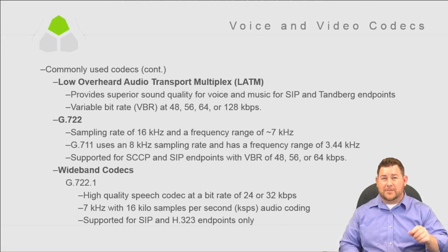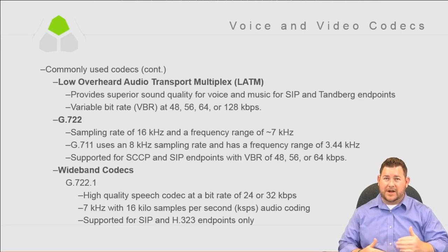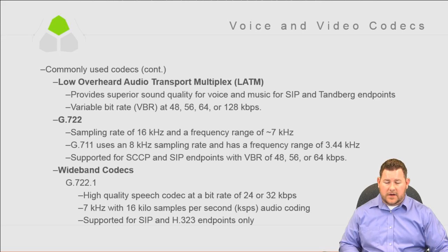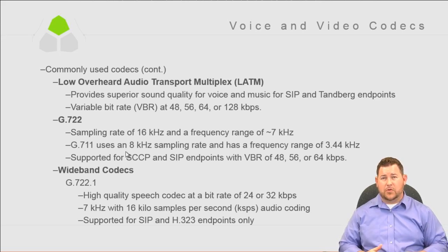G.722.1 is another high-quality speech codec with a bit rate of 24 or 32K per second, 7 kHz frequency with 16K samples per second audio coding, and is supported for SIP and H.323 only. G.722 itself is supported both by Skinny and SIP with a variable bit rate of 48, 56, and 64 kilobits per second.